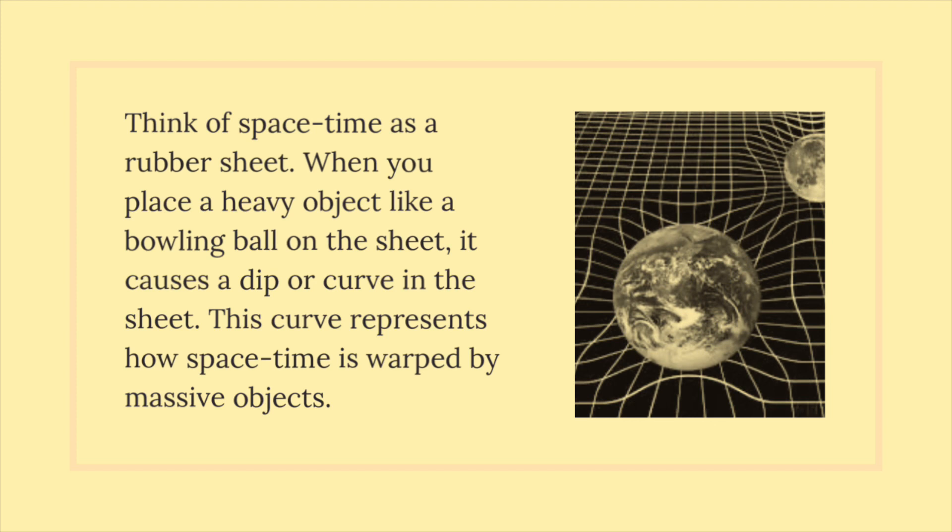Think of spacetime as a rubber sheet. When you place a heavy object like a bowling ball on the sheet, it causes a dip or curve in the sheet. This curve represents how spacetime is warped by massive objects.